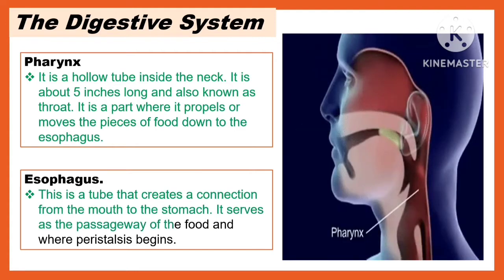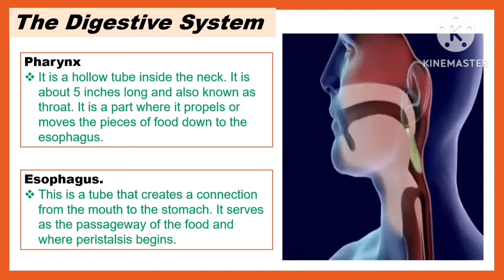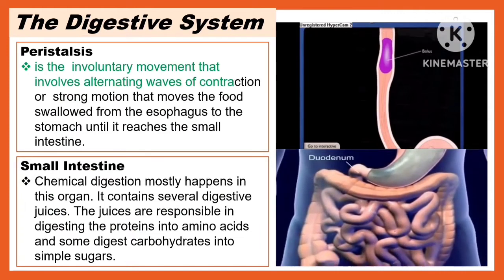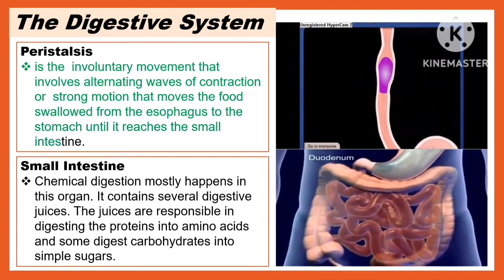Another part of the digestive system is the esophagus. This is a tube that creates a connection from the mouth to the stomach. It serves as the passageway of food and where peristalsis begins. Peristalsis is an involuntary movement that involves alternating waves of contraction or strong motion that moves the food swallowed from the esophagus to the stomach until it reaches the small intestine.